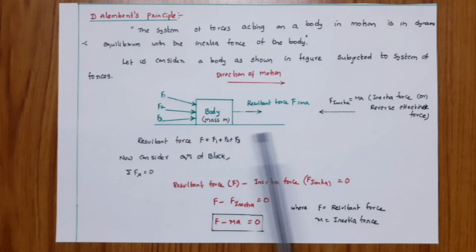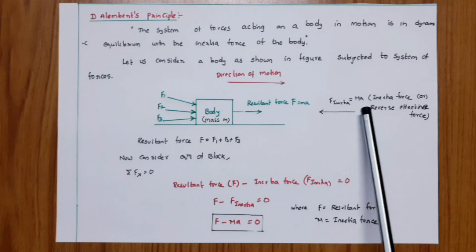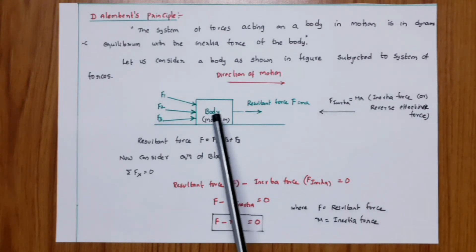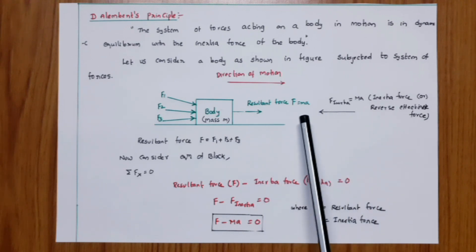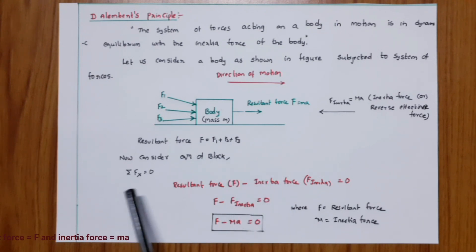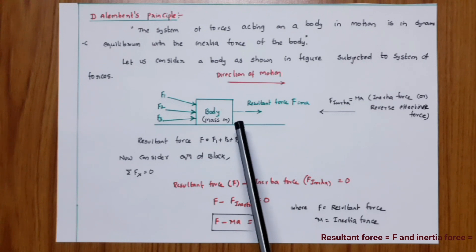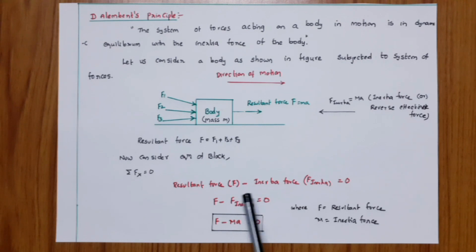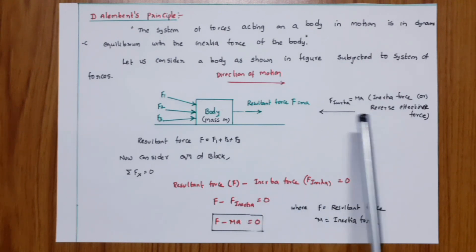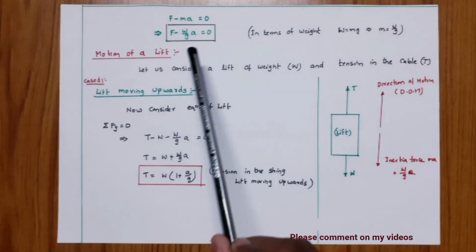To bring the system into equilibrium, we apply a force of the same magnitude in the opposite direction. Applying ma in the opposite direction — this ma is called the inertia force or reverse effective force. The resultant force acts in one direction and the inertia force acts in the opposite direction. Considering equilibrium: sigma Fx equals zero, so F minus F-inertia equals zero, giving F minus ma equals zero. In terms of weight: F minus (W/g) times a equals zero.